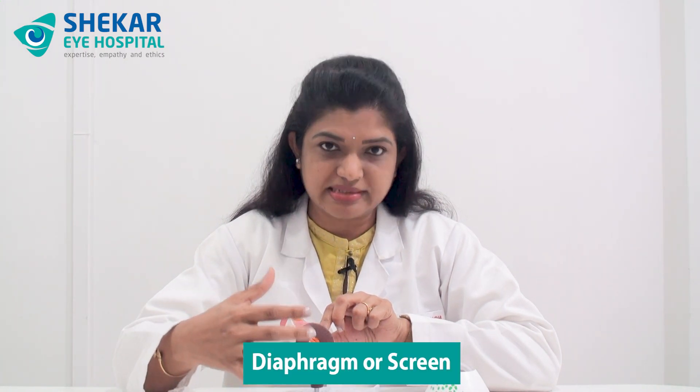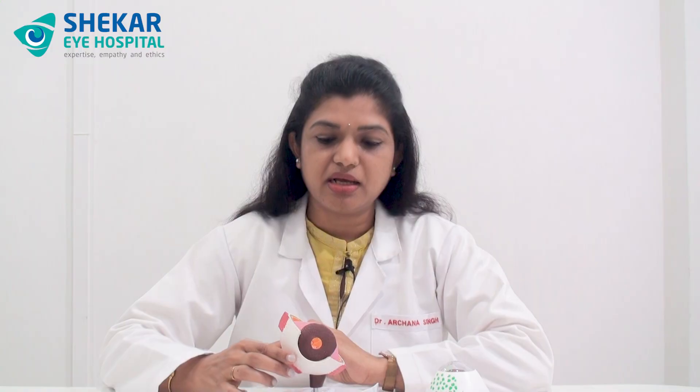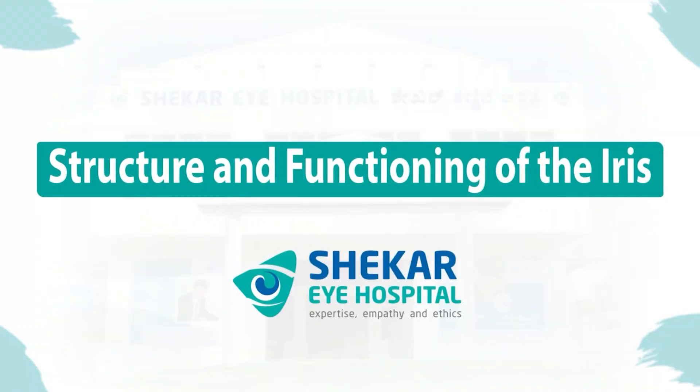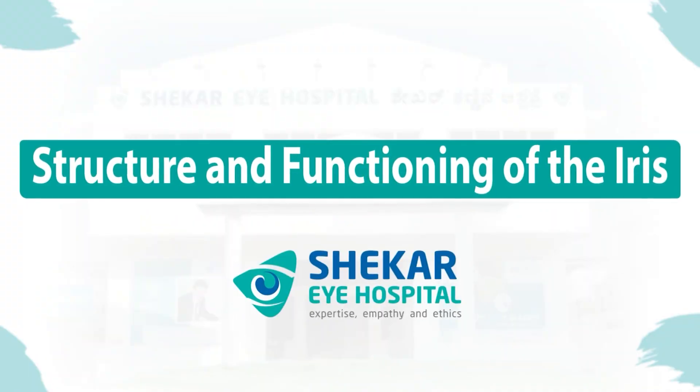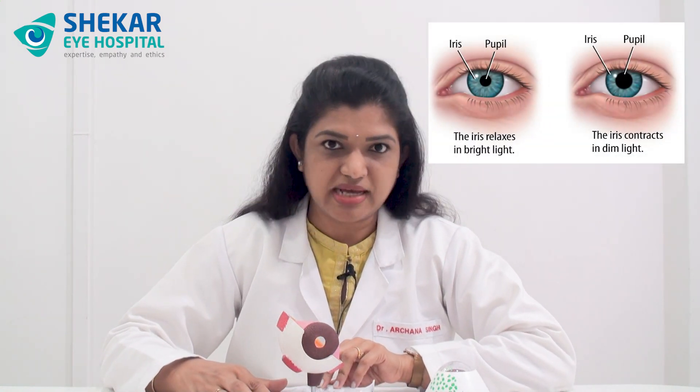Iris is a thin muscular structure. You can call it a diaphragm or screen, and in the center of this diaphragm or iris, there is a small blackish circular opening which is called the pupil. Let us look into the structure and functioning of the iris.